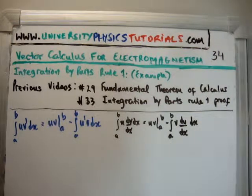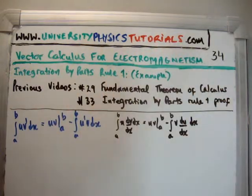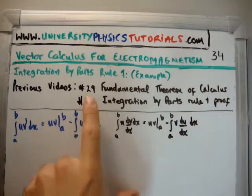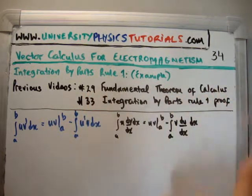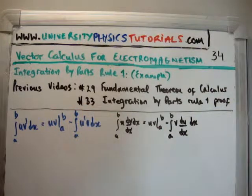Okay, in this video I'm going to continue with my tutorials on vector calculus for electromagnetism. This is video number 34, and I'm going to discuss integration by parts, rule 1, with an example which I proved in the previous video. I'd like to draw your attention to my website universityphysicstutorials.com. The previous videos which are relevant to this are number 29, where I discussed the fundamental theorem of calculus, and number 33, where I proved integration by parts.